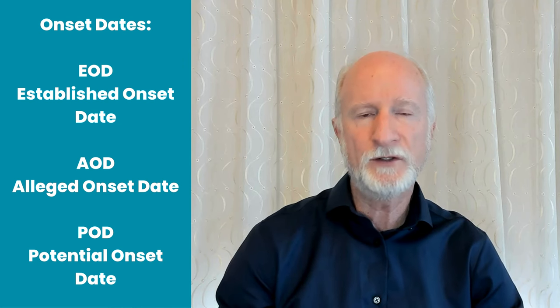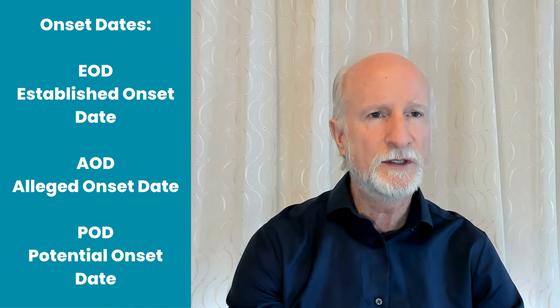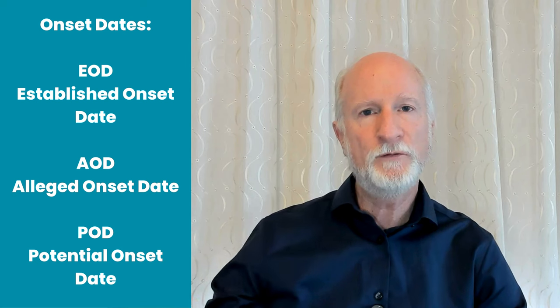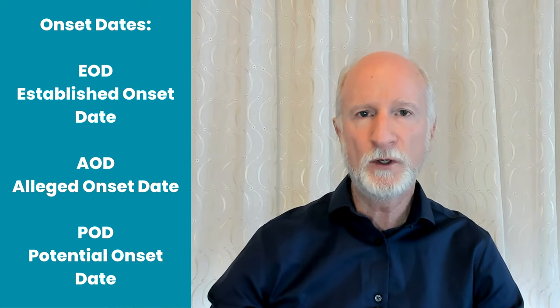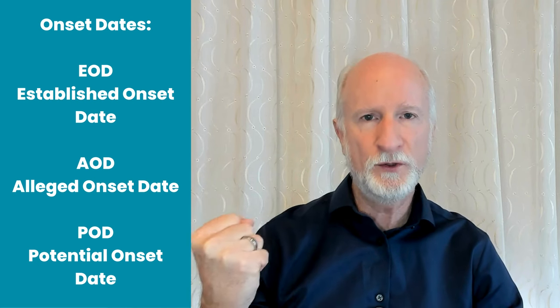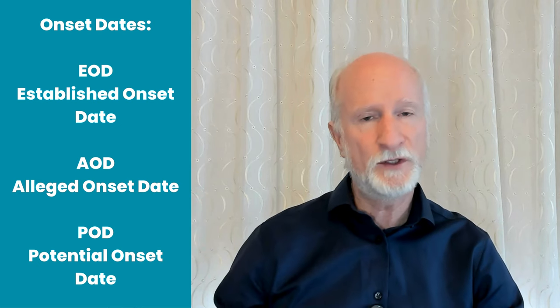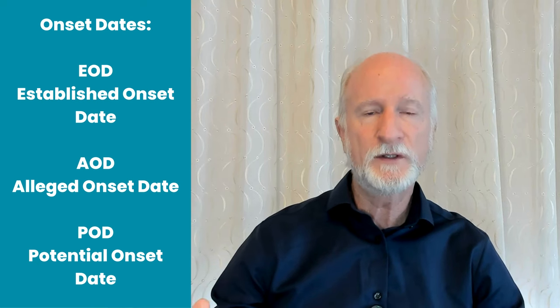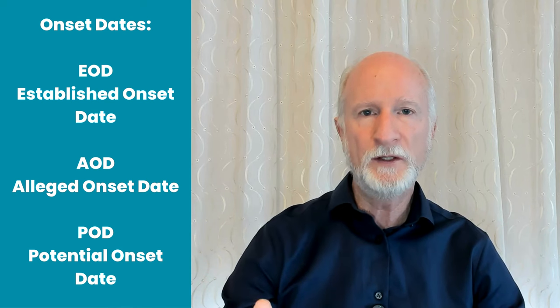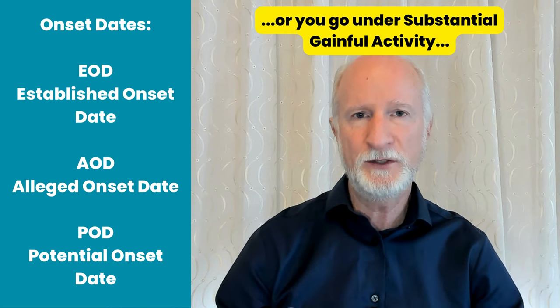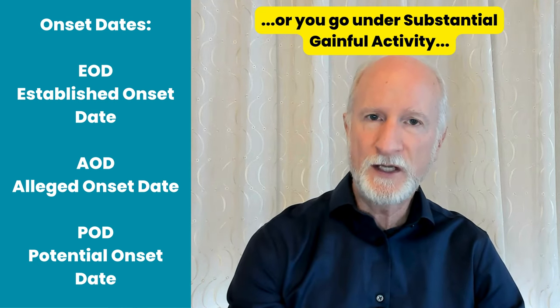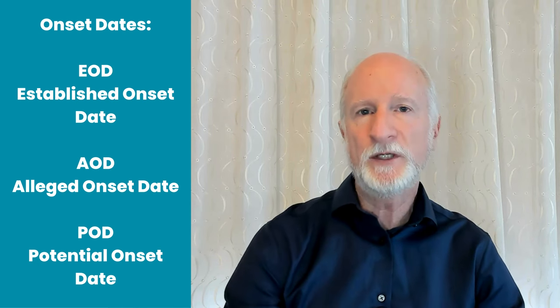For non-traumatic disabling conditions it's harder to figure out. Usually it comes down to when you actually stopped working. If you were disabled but kept pushing through another month of work, Social Security considers that you weren't disabled during that period — that's just how the system works. Once that disabling condition completely ends your ability to work, the onset date starts on that particular month.